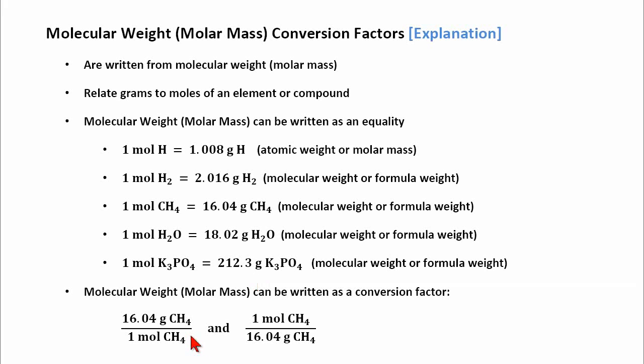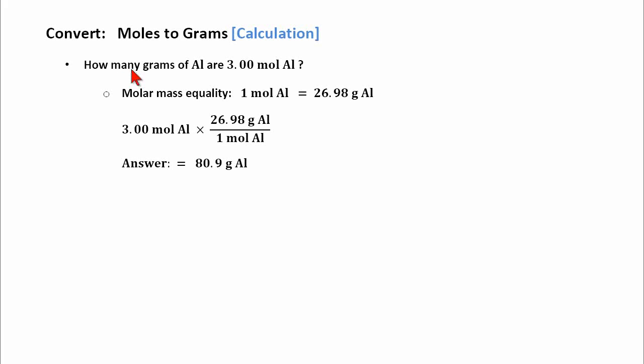And we can express this as a conversion factor by placing one part of the equation on top of the other or the inverse. This becomes important when we determine a couple of things. Let's go through some examples. How many grams of aluminum are 3.0 moles of aluminum? Here's the mass equality. You simply look it up in your periodic table of elements. Take 3 moles, multiply it by the conversion factor, which is your dimensional analysis, and you get 80.9 grams of aluminum, which is the answer.